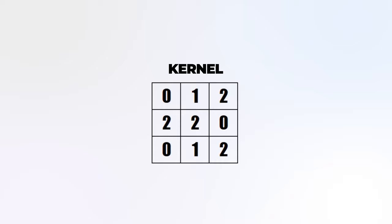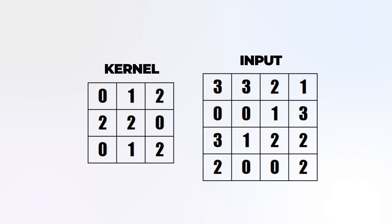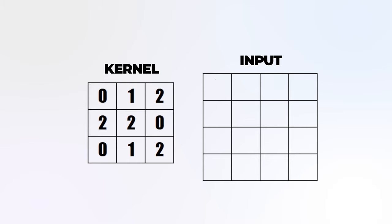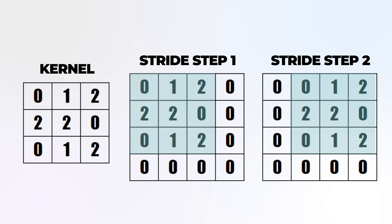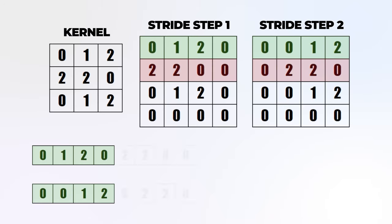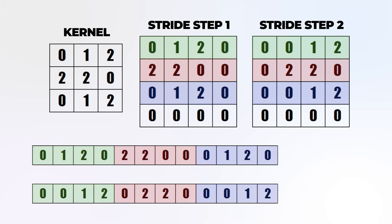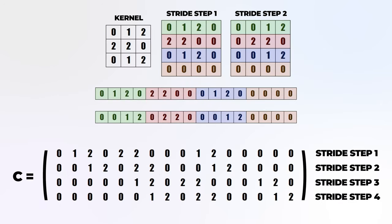To do the vectorization, you need to prepare a convolution matrix. Since we have our 4x4 input, the matrix needs to have 16 columns and it will have a row for every stride step — so in our case, four rows. To create this convolution matrix, you take the input and disregard all its values. Then you overlay the input with the kernel in the position of the first stride step. Where the kernel overlaps the input, you fill in the values from the kernel; where it does not overlap, you enter a zero. Now you flatten the resulting 4x4 matrix into a single row — that will be the first row of our convolution matrix. Repeat this for the remaining three stride steps. This way, you end up with the final 4x16 convolution matrix.